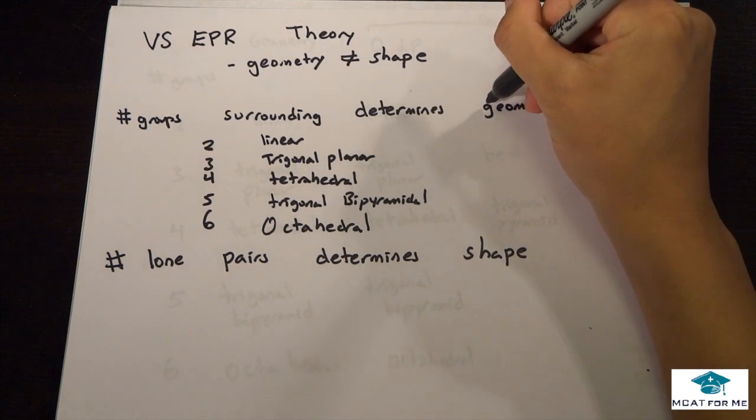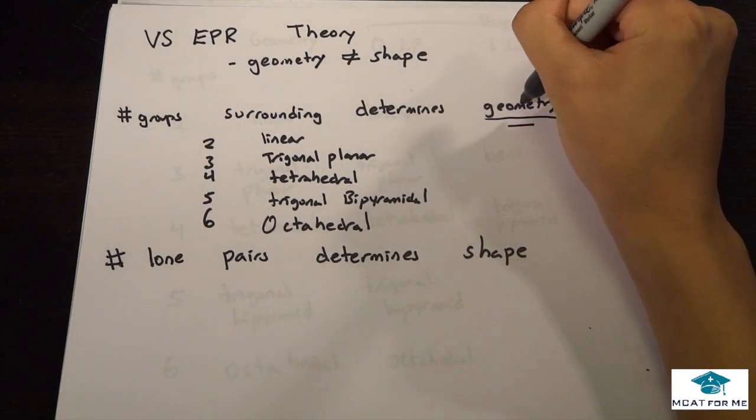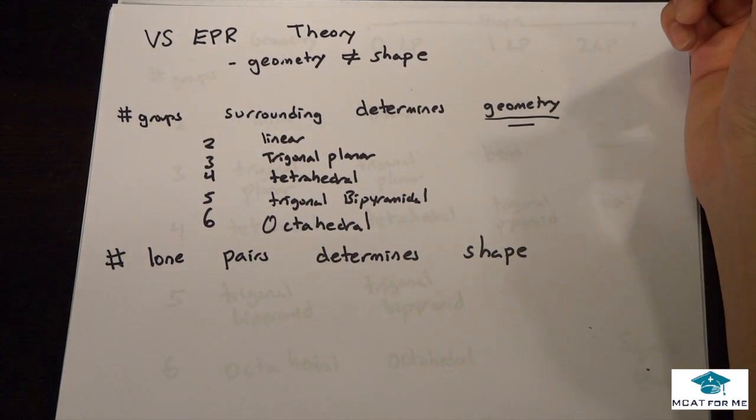Nine times out of ten, this is what they're going to be asking for - the molecule's geometry. So be careful if they ask you the geometry or shape because they can be different, and what this means is that you just have based on the number of groups.